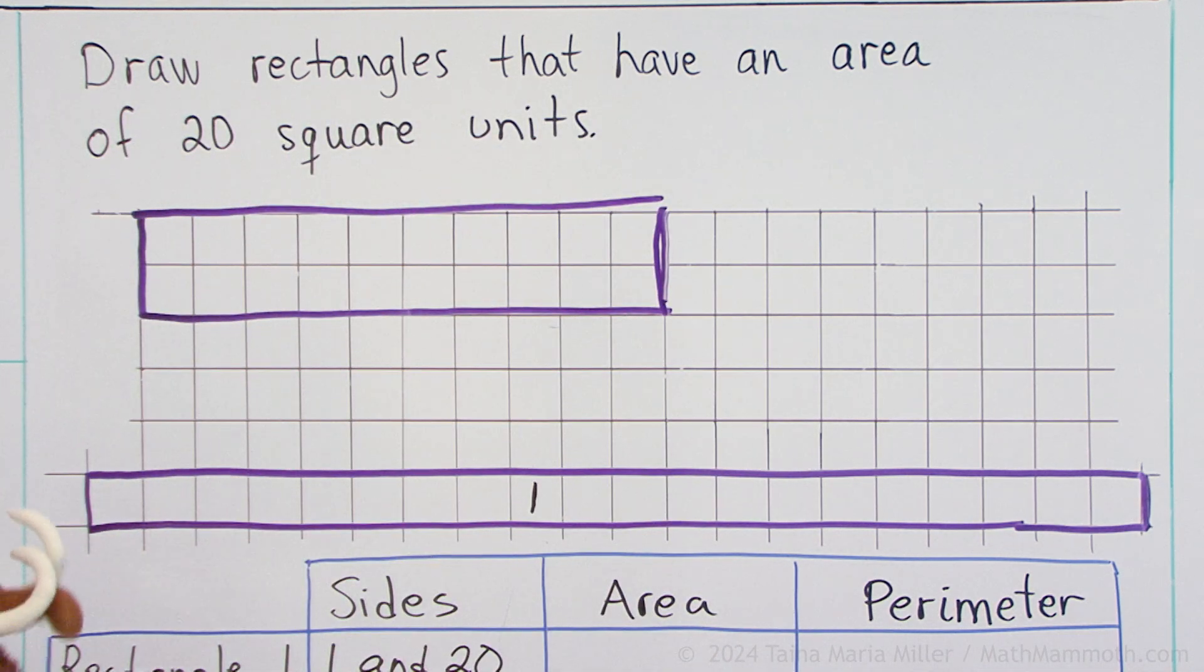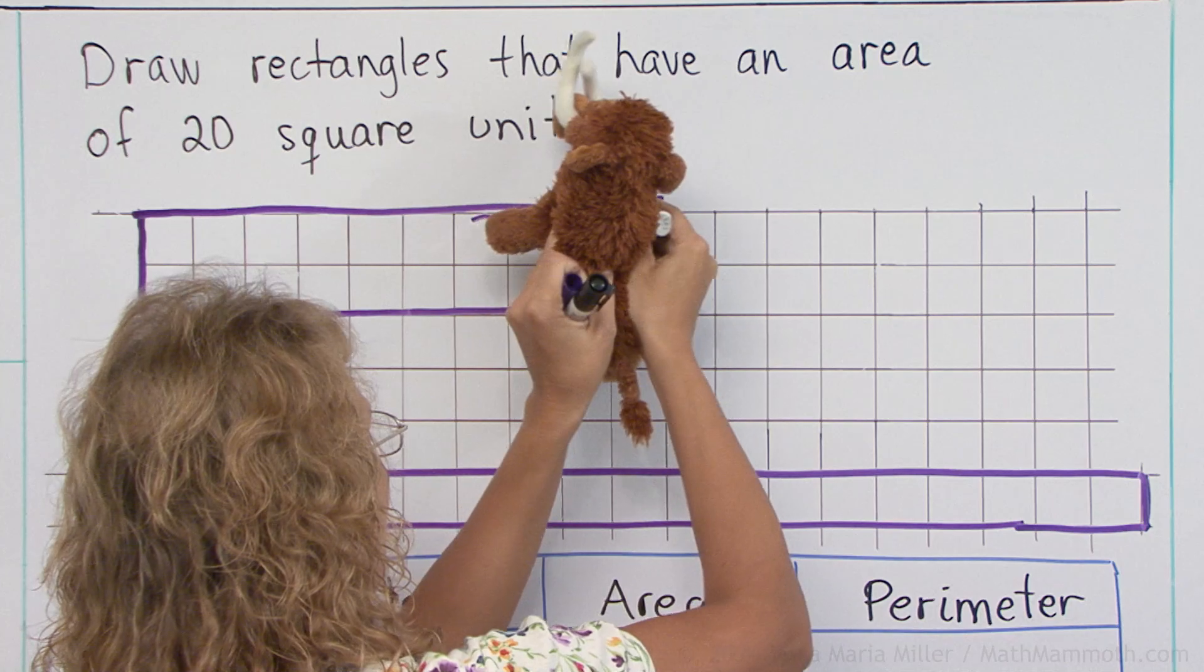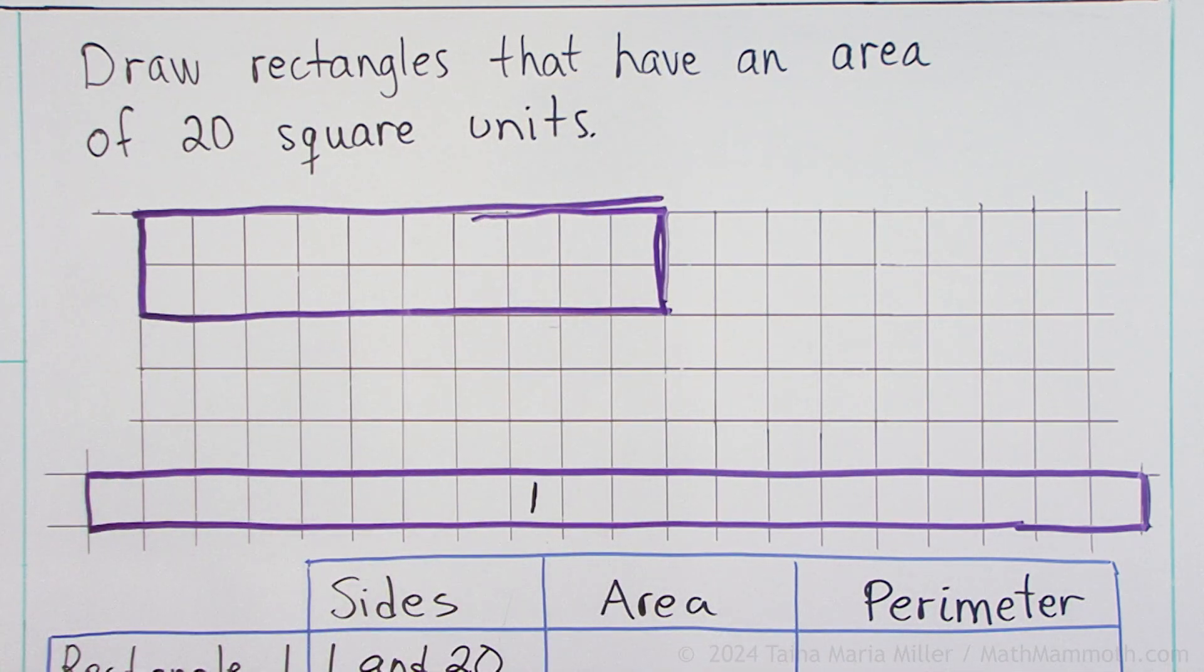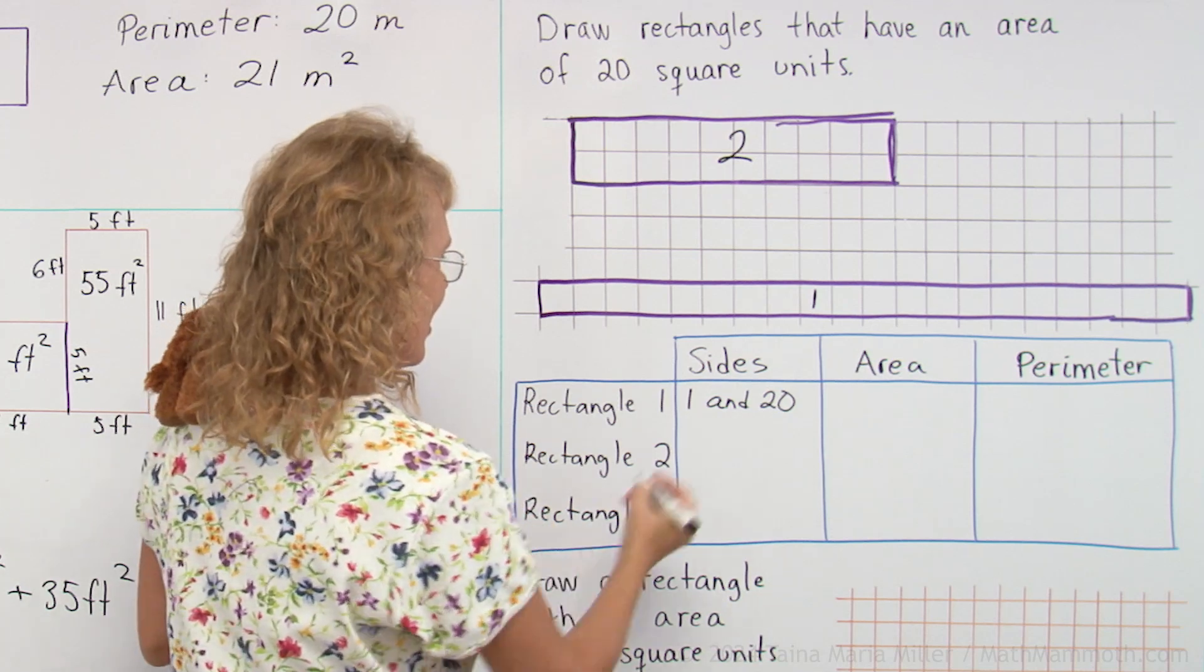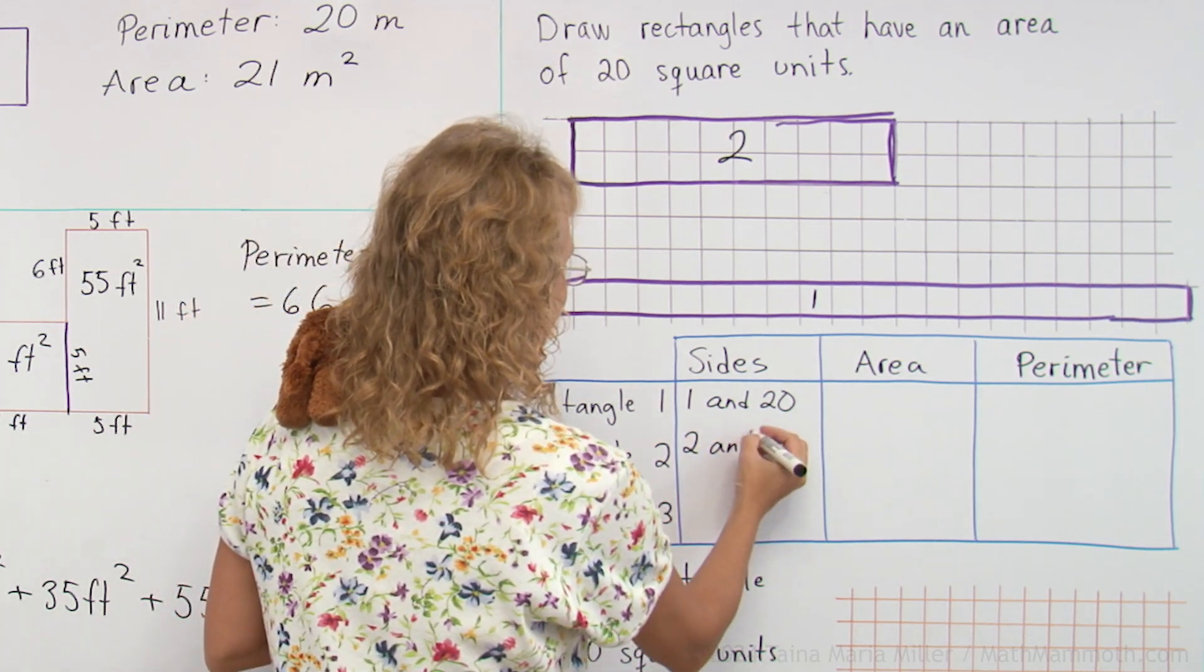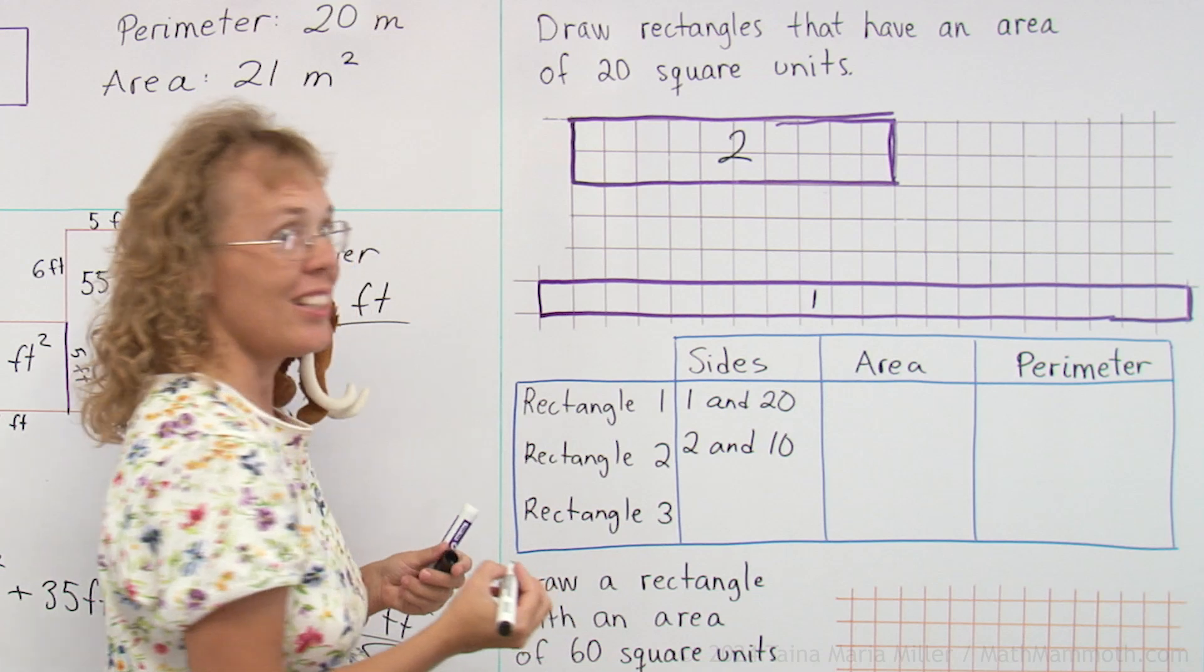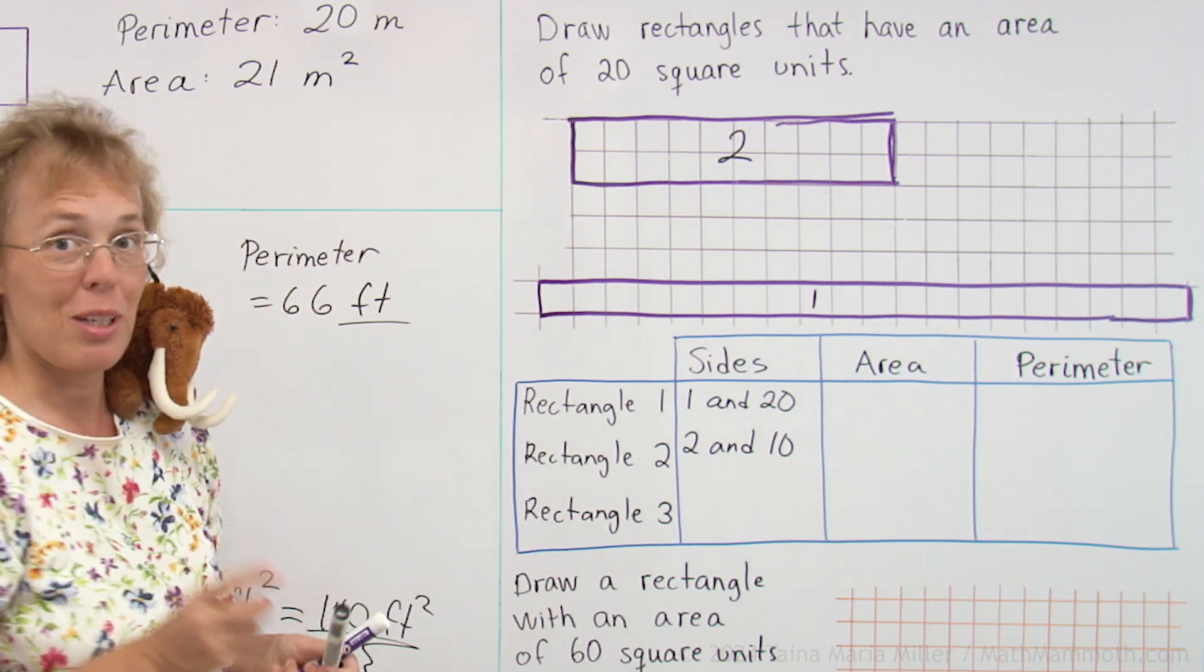Oh Matty, try to be careful. Don't be sloppy. Not much better. This is rectangle number 2, and its sides are 2 and 10, because 2 times 10 is 20. One more.